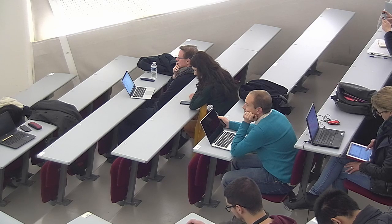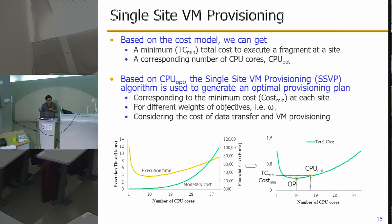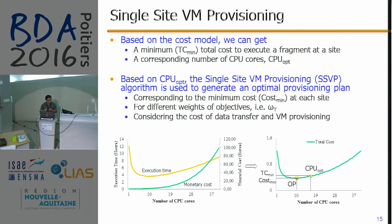In our proposed single-site VM provisioning algorithm, using our cost model it works very well and it constructs different costs to use virtual machines at different cloud sites. If the cost models provided by different cloud providers are different, we can also adapt our approach to different cost models, and we will always search for the minimum cost to execute a fragment at a single cloud site. This will be very interesting future research. Thank you.